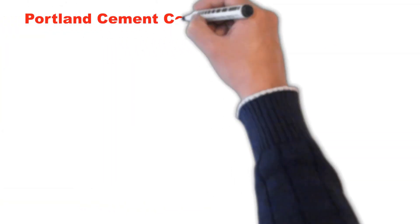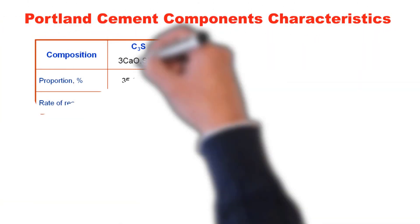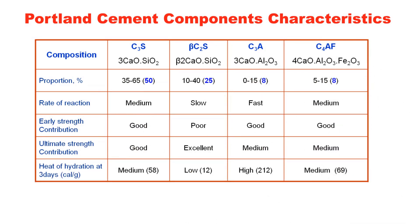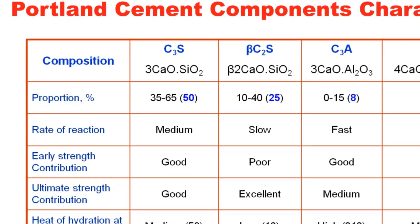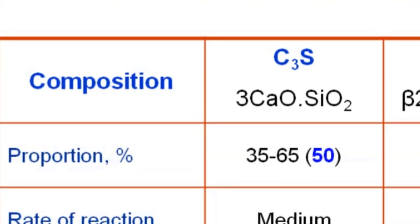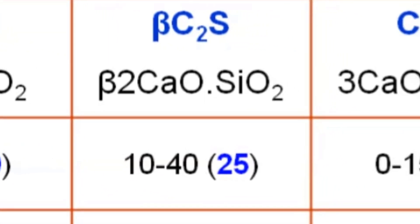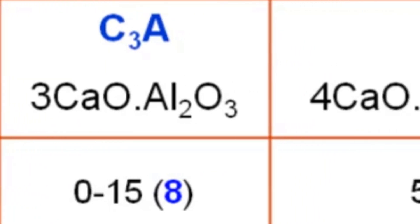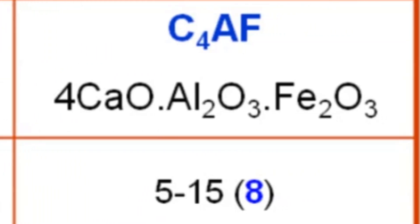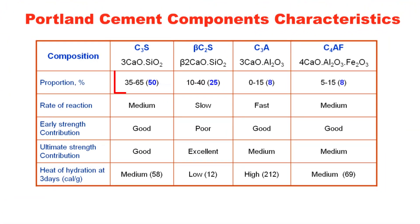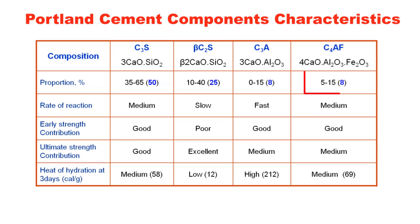The following table shows the proportion range and characteristics of these four components. C3S in a typical Portland cement clinker varies from 35 to 65%; C2S (beta form) varies from 10 to 40%; C3A varies from 0 to 15%; and C4AF varies from 5 to 15%. A typical modern Portland cement clinker has C3S at 50%, C2S at 25%, C3A at 8%, and C4AF at 8%.